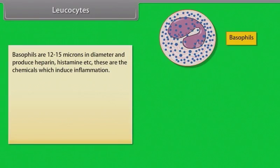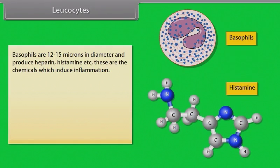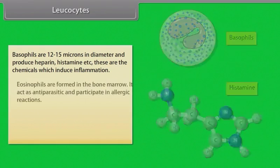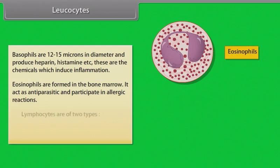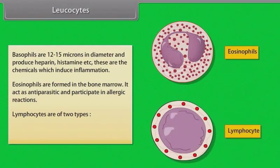Basophils are 12 to 15 microns in diameter and produce heparin, histamine, etc. — chemicals which induce inflammation. Eosinophils are formed in the bone marrow; they act as anti-parasitic and participate in allergic reactions.